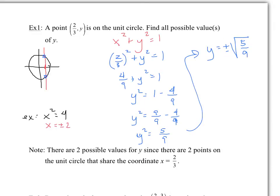Since we can take the square root of nine, which gives a clean number, the result is y equals plus or minus square root of five over 3. That's where the two solutions come in: the positive square root of five over 3 is the top point on the circle, and the negative square root of five over 3 is the bottom point.